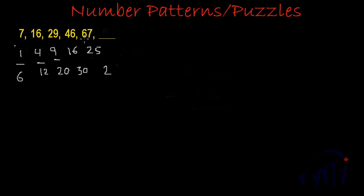And 29 minus 9 is 20, and 46 minus 16 is 30, and 67 minus 25 is 42. So as you can see, these are the squares of 1, 2, 3, 4, 5 respectively. And this 6 is 2 multiplied by 3, and this 12 is 3 multiplied by 4. And this 20 is 4 multiplied by 5, and this 30 can be written as 5 multiplied by 6, and this 42 can be written as 6 multiplied by 7.